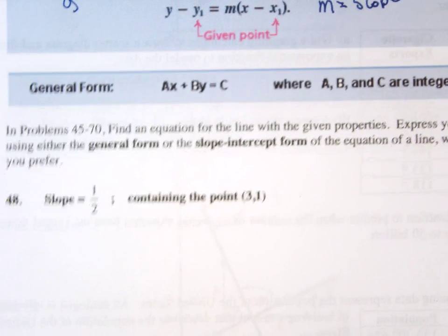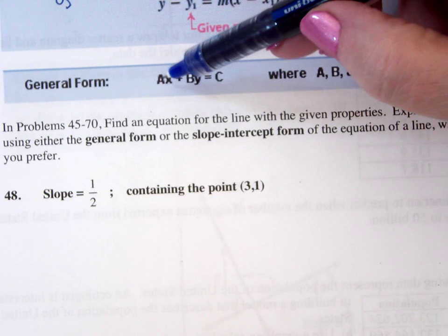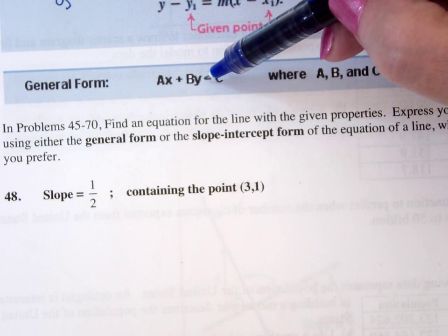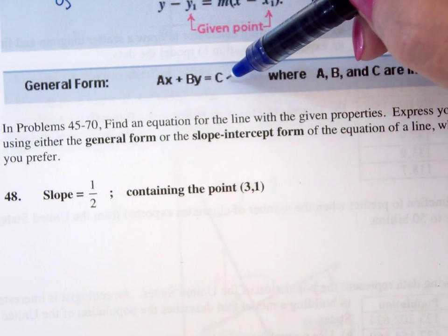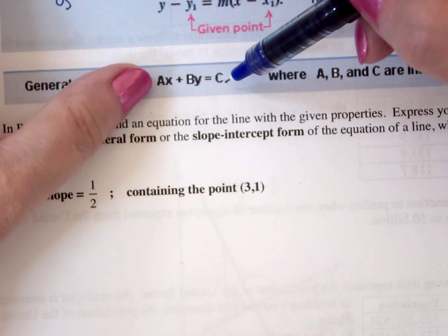The final form is general form. That's where you have all your x's on one side, and y's on one side, and constants on the other. When we're doing systems of equations, lots of times we'll write the equation in that form.